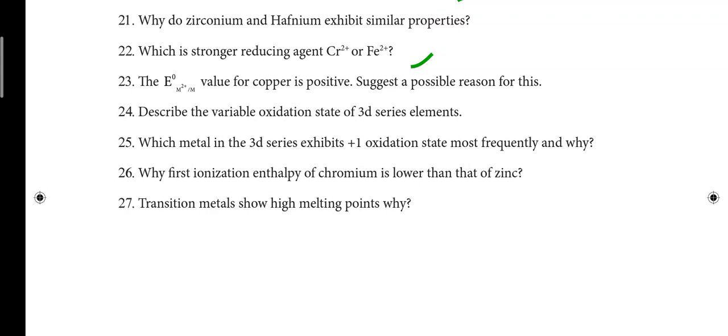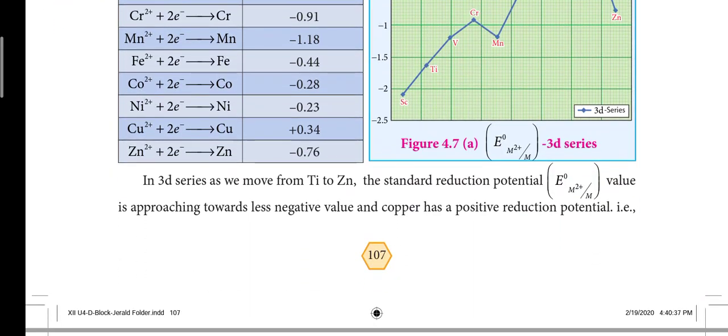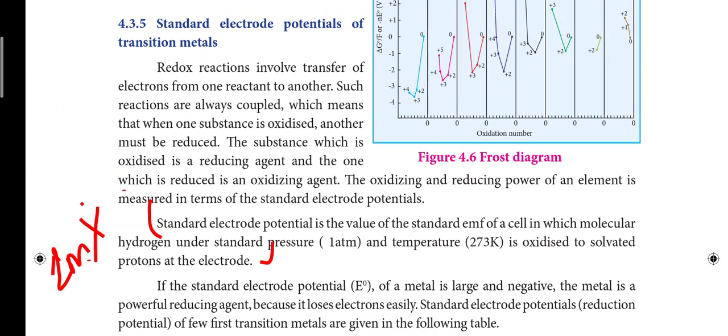I already have this lesson covered. When the book pack comes, the questions I will mark are very important. Go to page number 107 — section 4.3.5, standard electrode potential of transition metals. Standard electrode potential is defined as the standard EMF value of a cell. If asked to define standard electrode potential, write that one-line definition — this is a 2-mark question.